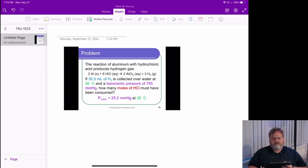Here we're talking about a reaction of aluminum with hydrochloric acid to produce hydrogen gas. We're getting a balanced equation there: 2 Al solid plus 6 HCl aqueous gives us 2 AlCl3 in the aqueous solution plus 3 H2 gas. So we've got a balanced equation.